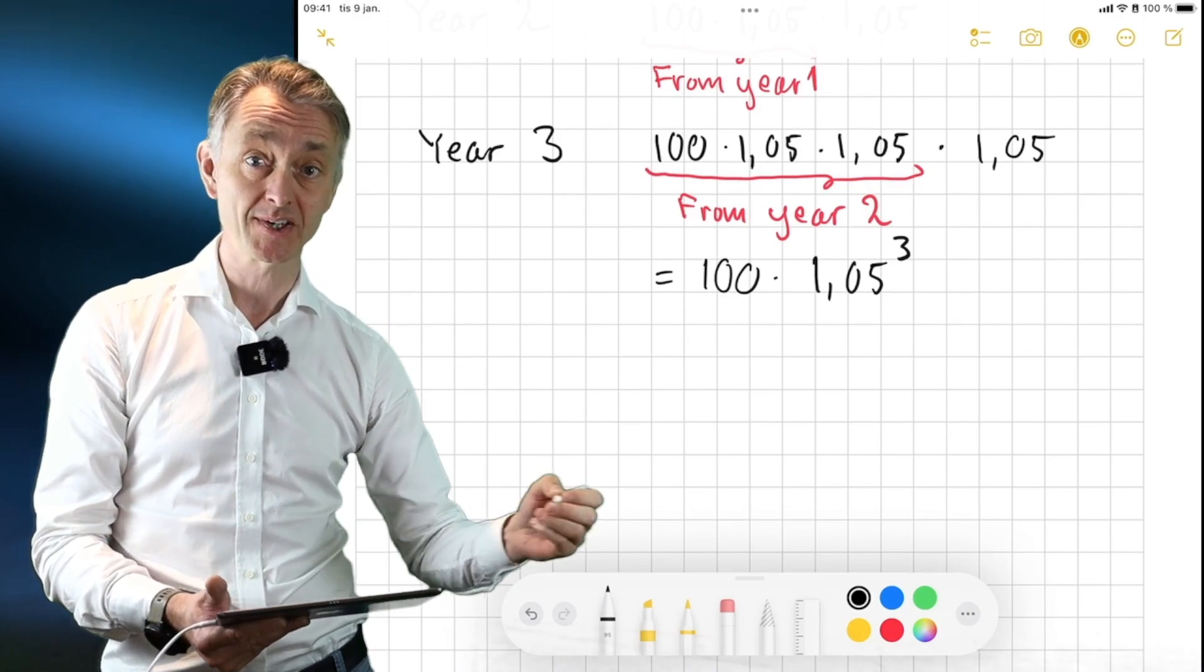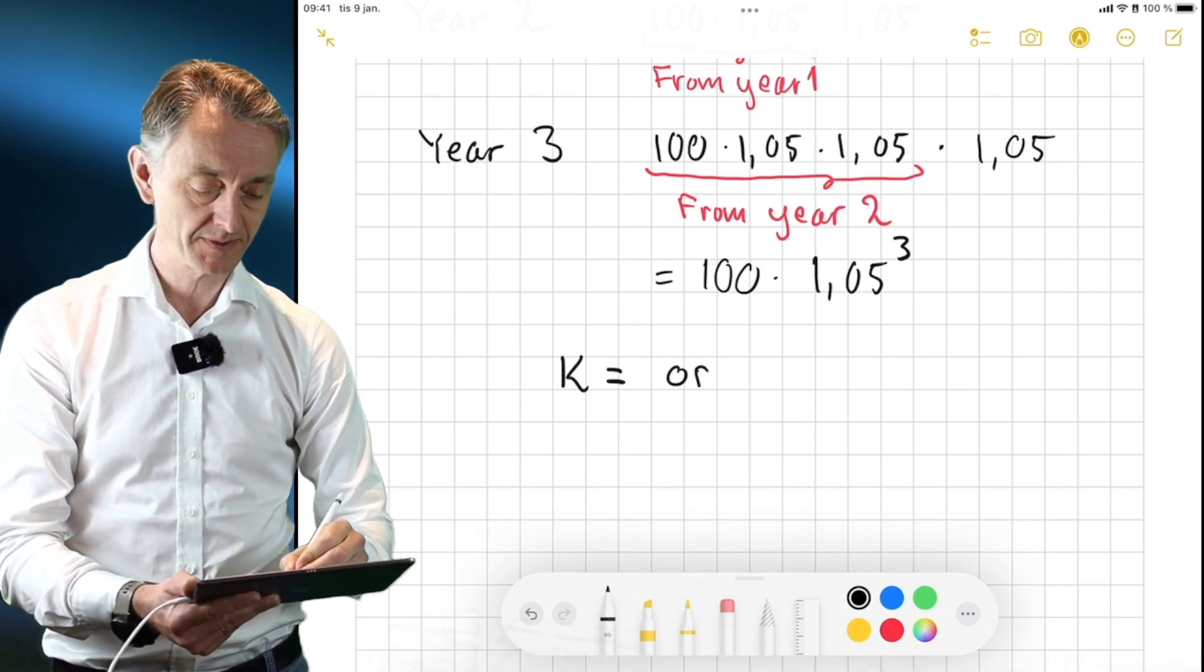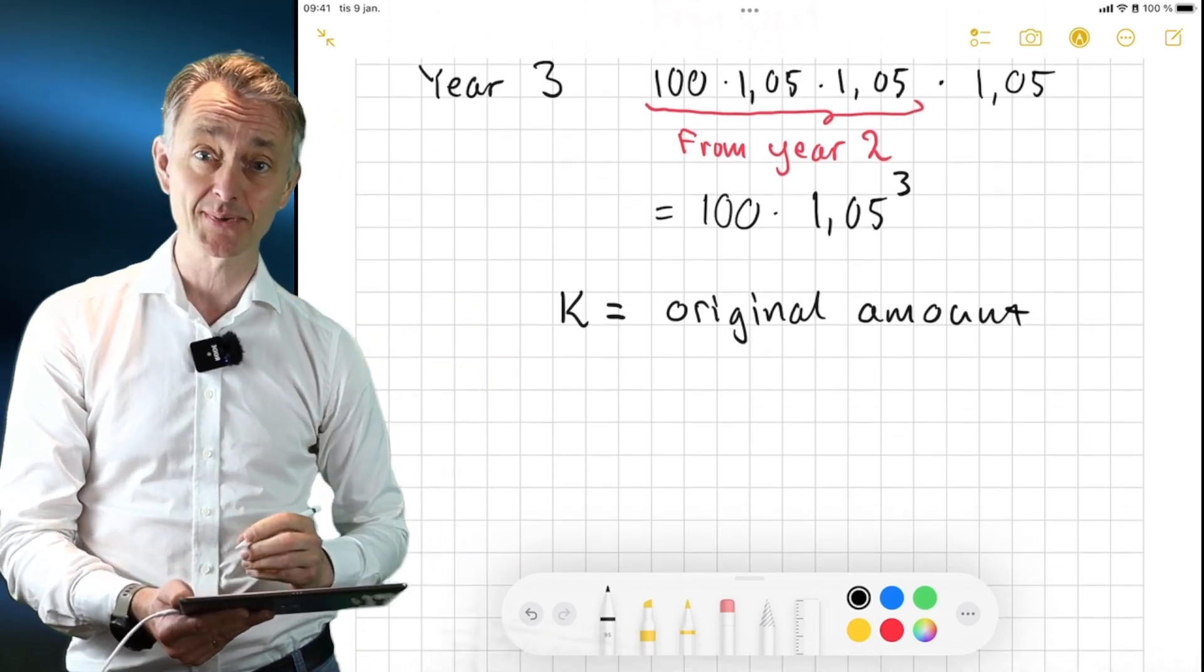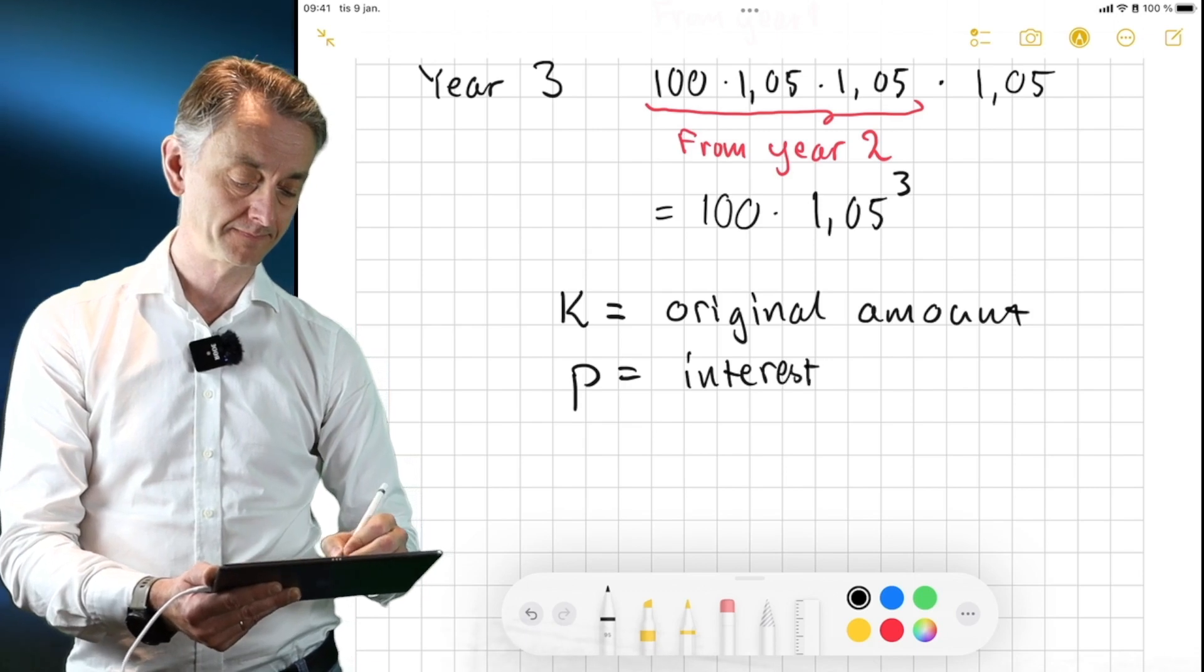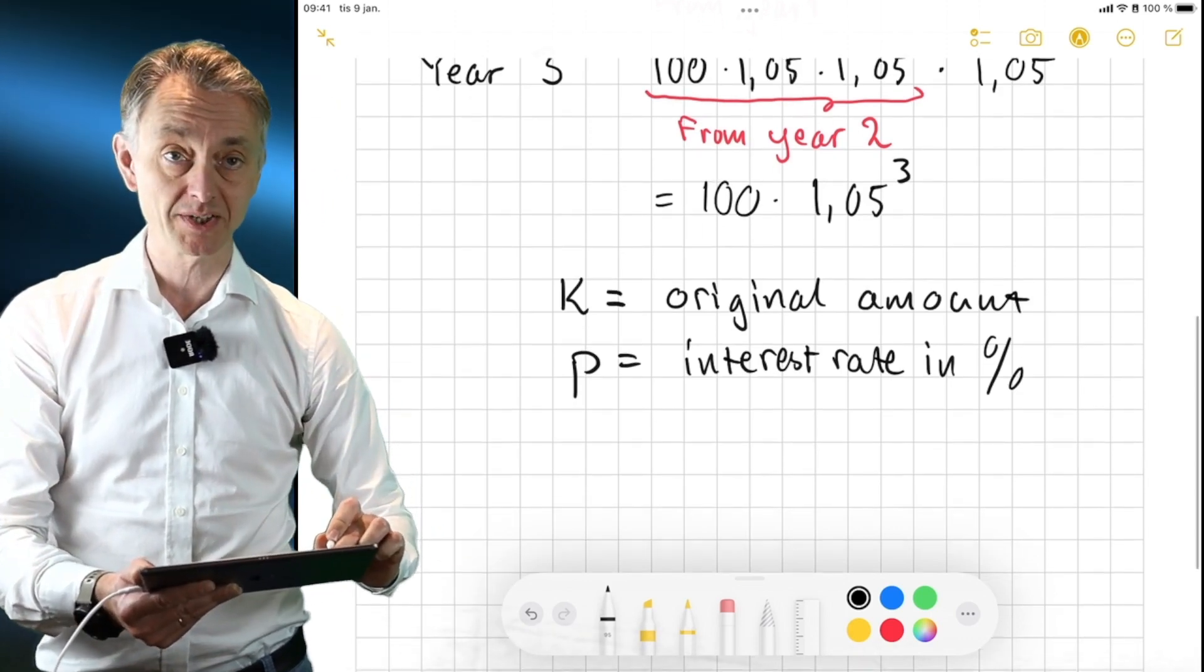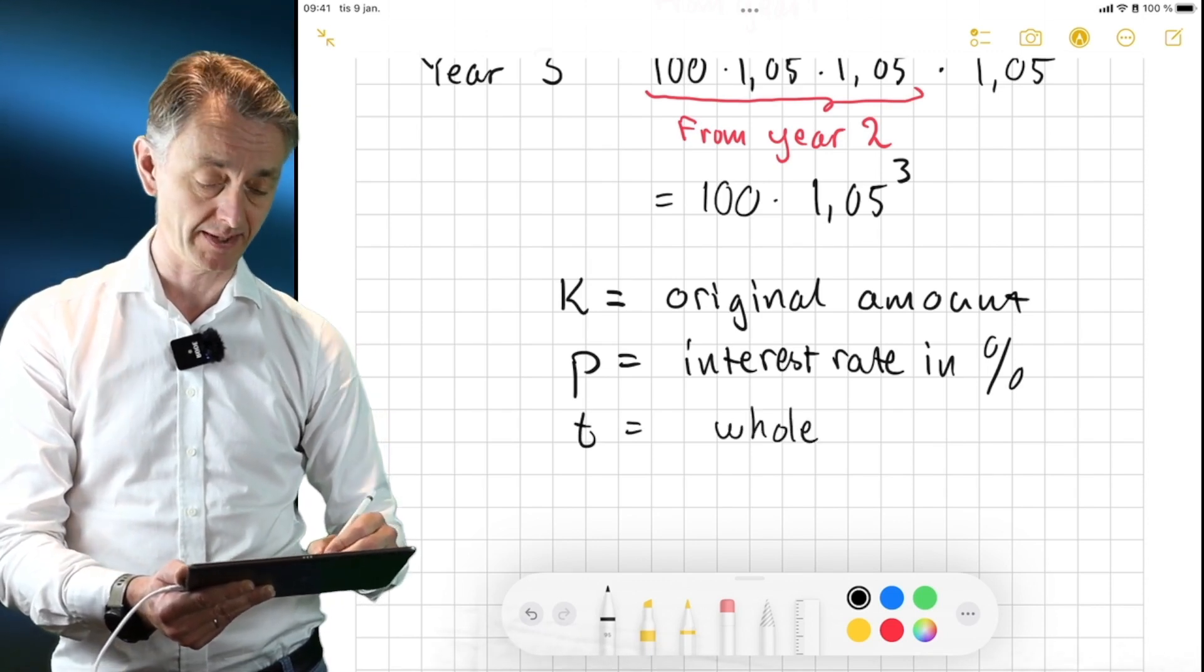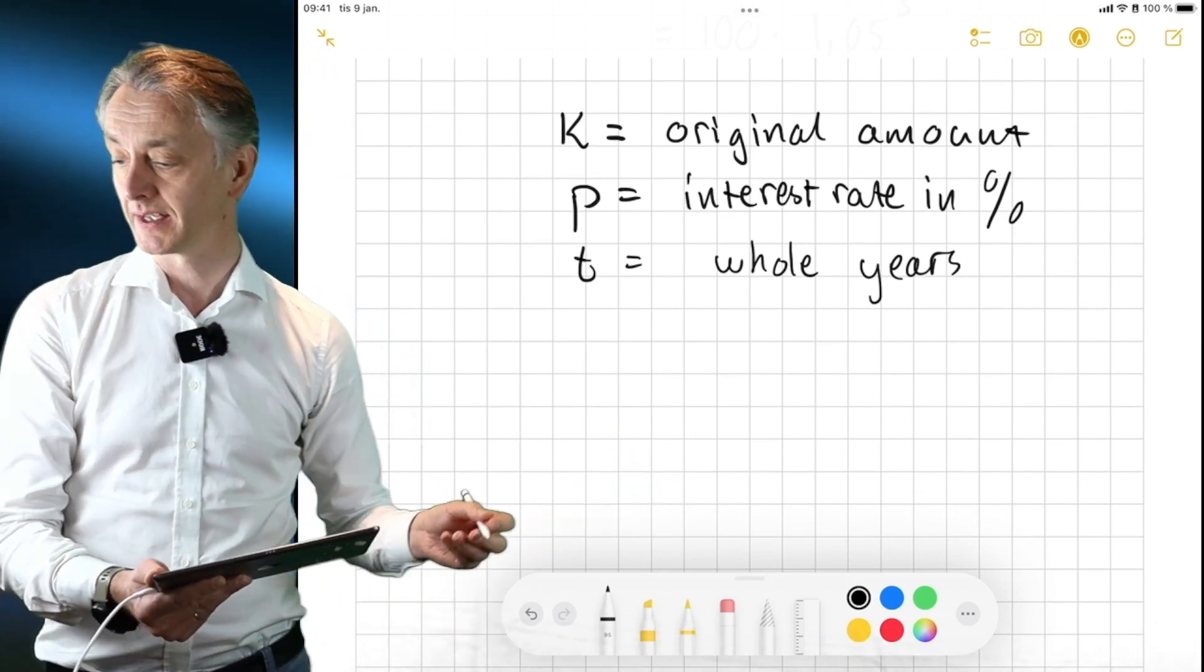So if we say that the capital you start with, the amount of money you walk into the bank at year zero, that is K. That's the original amount. And then to be able to solve a problem like this, we also need to know the interest rate, which was P. That is the interest rate in percent. And finally, we need to know for how many years has the money been remaining in the account. So T, that's the amount of whole years, for how many years the money has been in the account.